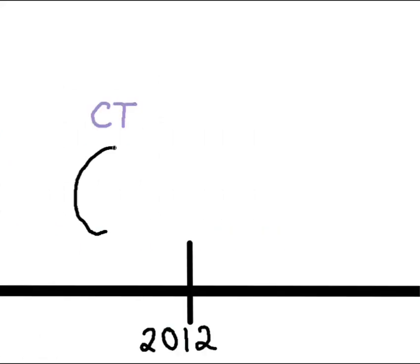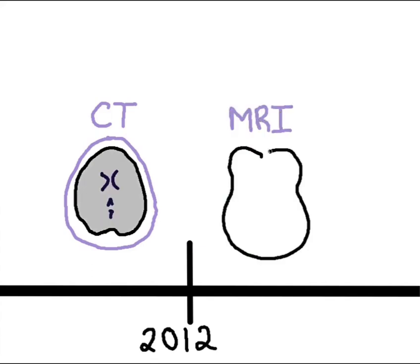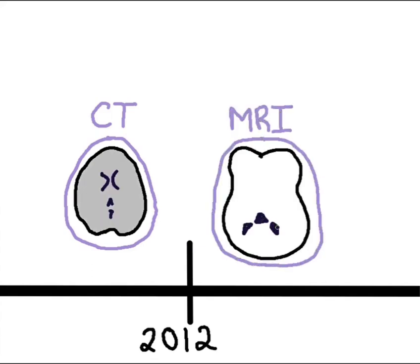Finally, in 2012, Van Horn and his team used the CT scans of Gage's skull with MRI scans of unaffected brains to see how Gage was influenced by the iron rod.